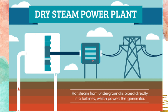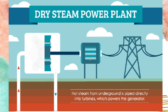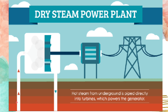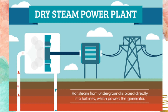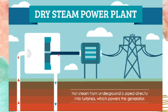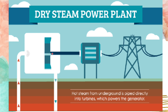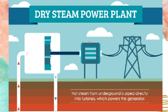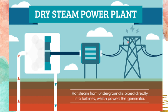Dry steam plants use hydrothermal fluids that are primarily steam. The dry steam power plant utilizes the hot steam from underground, which is piped directly into the turbines. As the turbines move, they activate and power the generator, allowing it to produce electricity that can be utilized by humans.